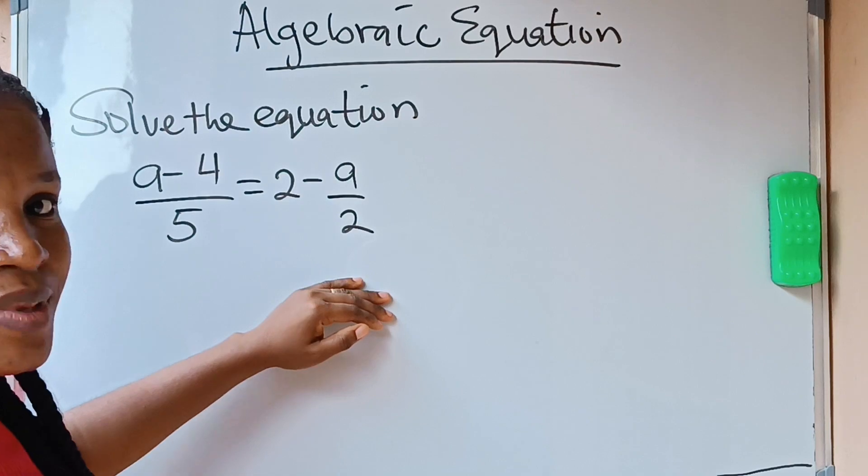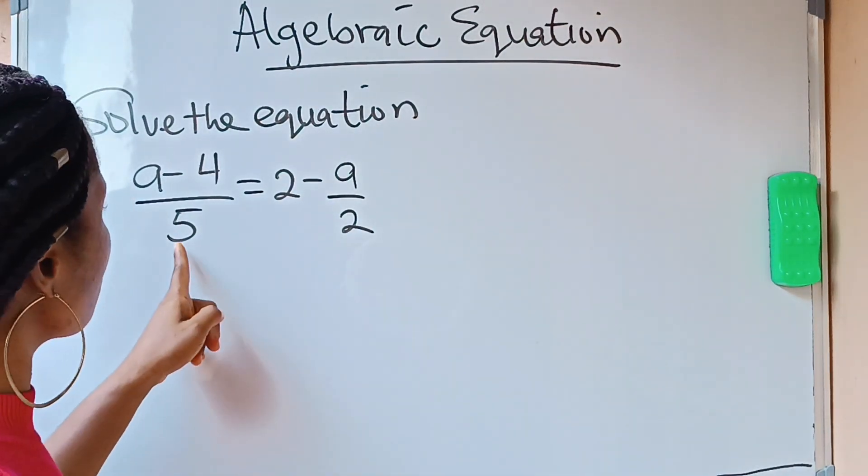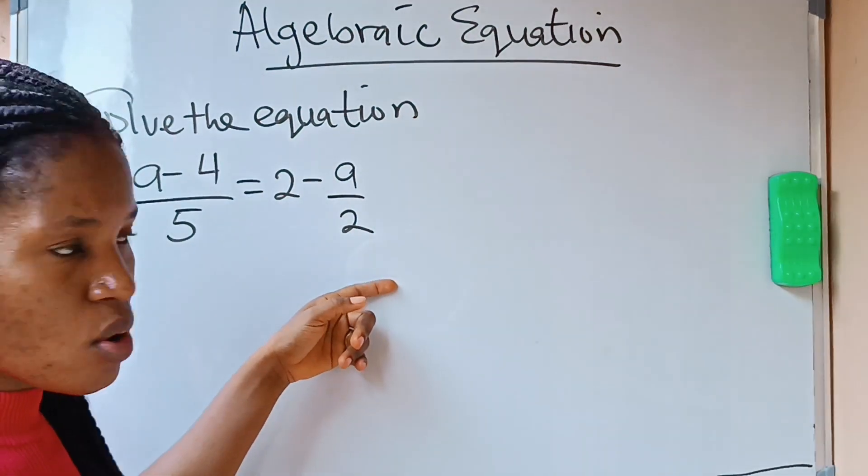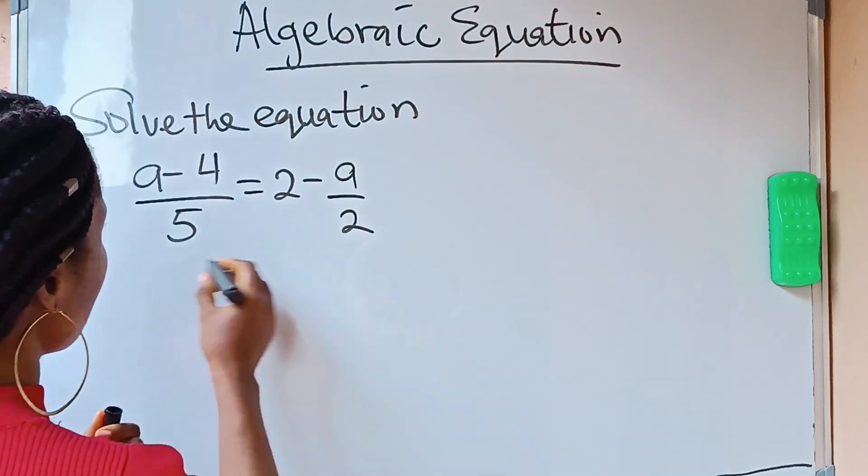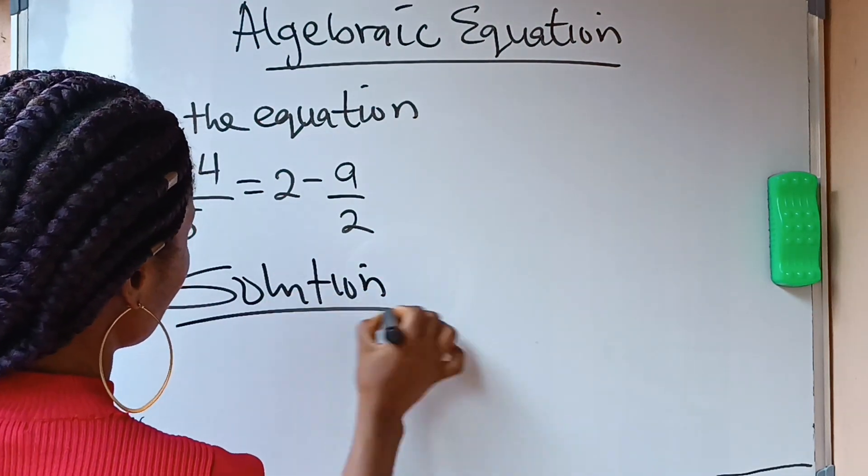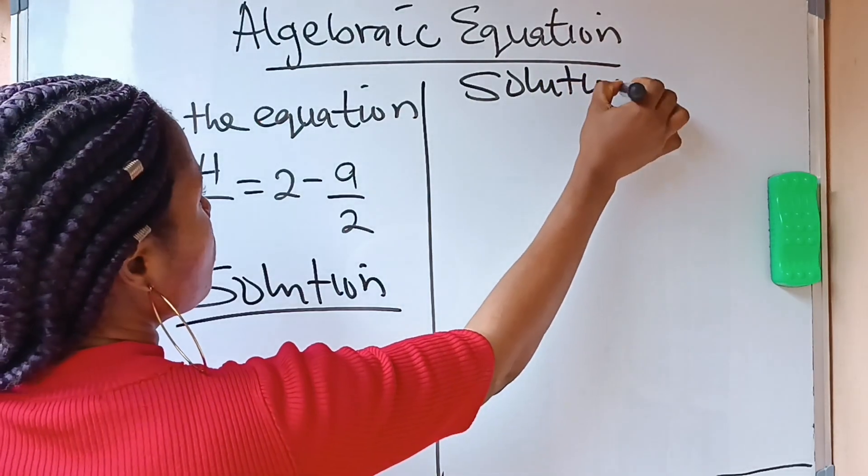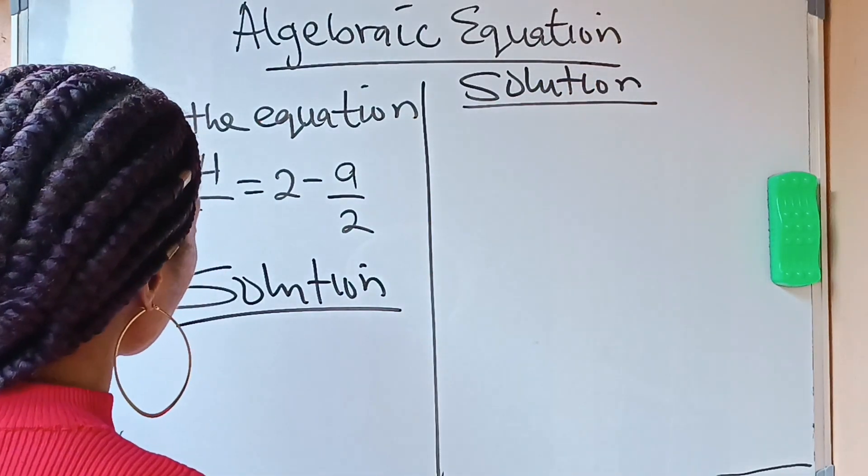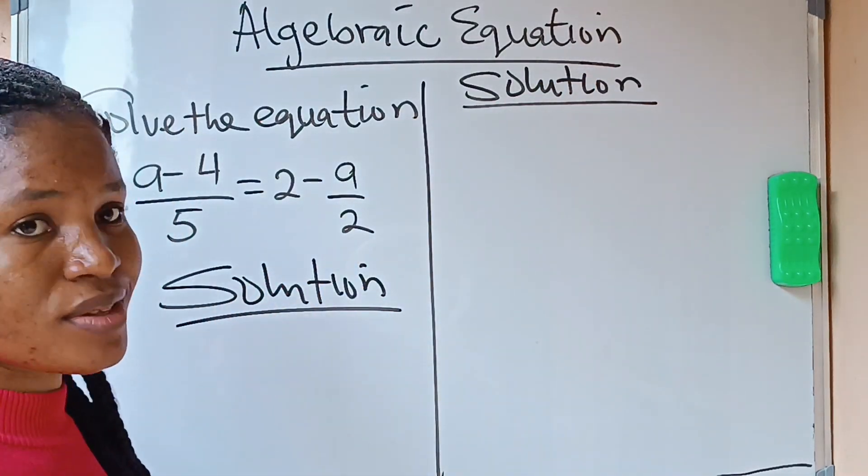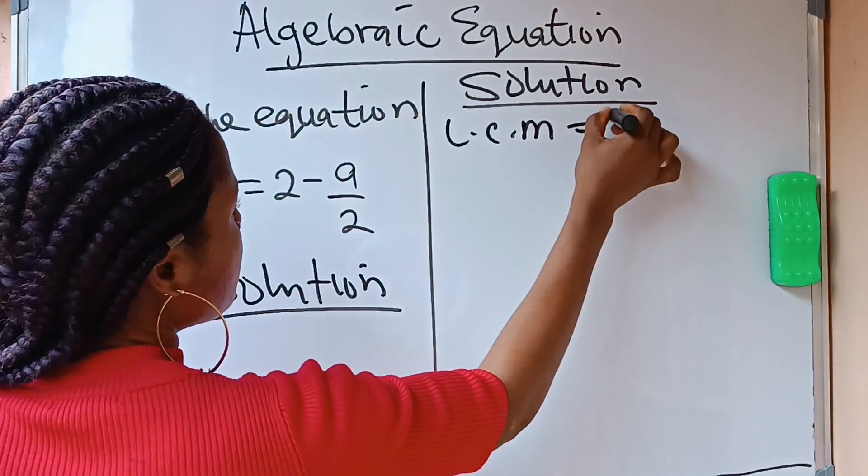First of all, once there is this equation sign, the first thing you need to do is to find the LCM of the denominators. Now, what is the LCM of the denominators? Well, let's solve it this way. Solution. The LCM of the denominators is 10.